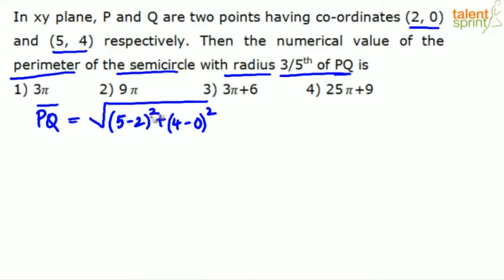Because anyway, we are squaring it. So whether it is plus or minus, when you square a value, it gives you the same magnitude, positive magnitude. Now simplify: 5 minus 2 is 3, 3 squared is 9, and 4 minus 0 is 4, 4 squared is 16. So this is root over 9+16, which is 25, and square root of 25 is 5.